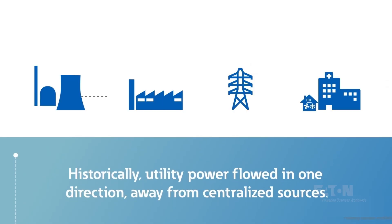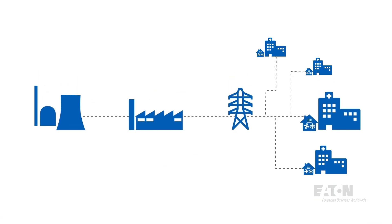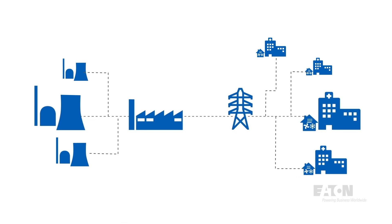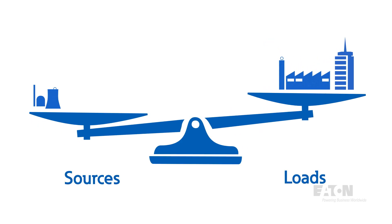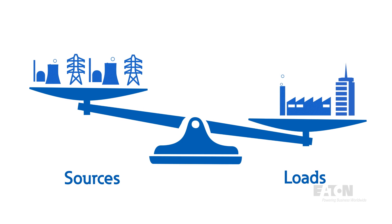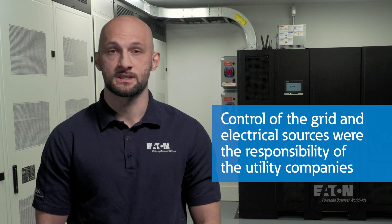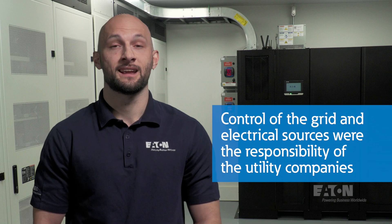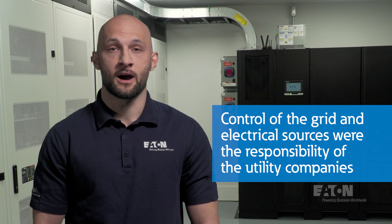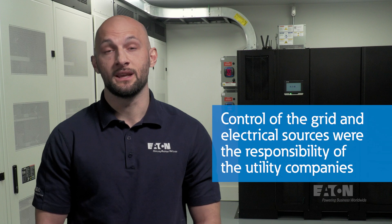Historically, electrical power systems were relatively simple. Utility power generation sources were connected to the electrical grid and closely controlled to match customer loads. If we added more loads, the utility would add more generation capacity. The control of the grid and traditional electrical sources like coal-fired power plants, gas generators, and nuclear power plants were the responsibility of utility companies. This provided stability and economies of scale with centralized costs and control.